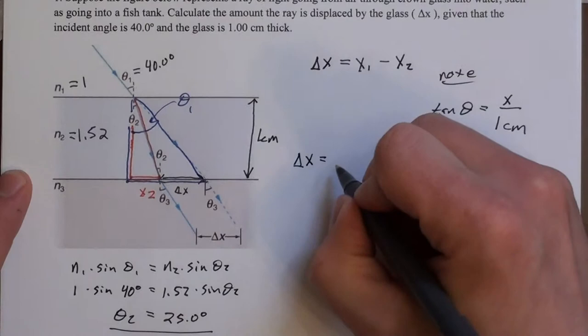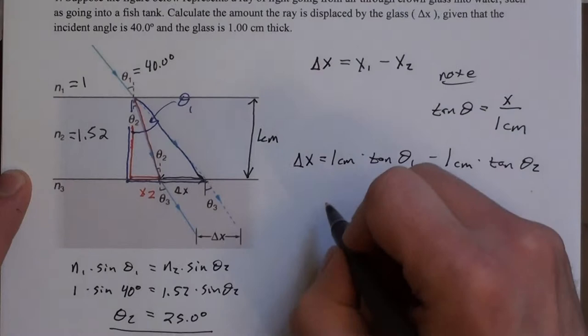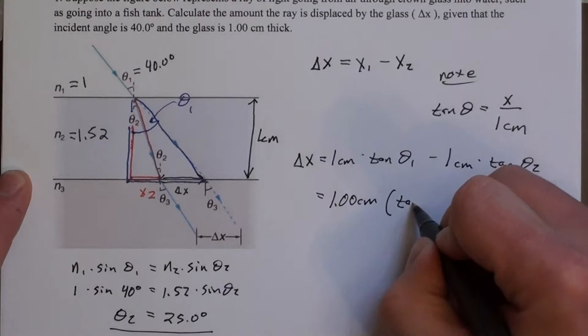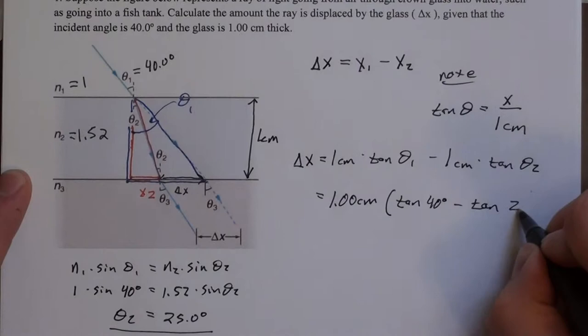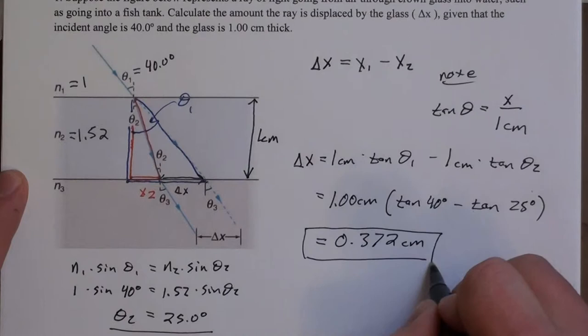I can say delta x is 1 centimeter times tan theta 1 minus 1 centimeter times tan theta 2. Filling that in, we'll put full precision here. 1 centimeter times tangent of 42 degrees minus tangent of 25 degrees. And when you put that together, you calculate that, you get 0.372 centimeters.